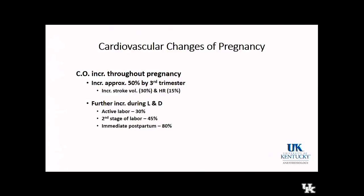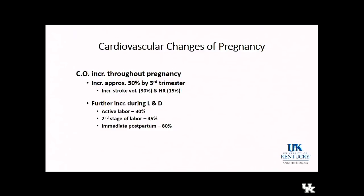Cardiac output increases throughout pregnancy. By the third trimester, cardiac output has increased about 50% above pre-pregnancy levels, predominantly from an increase in stroke volume, with a small increase in heart rate. During labor and delivery, you see further increases. During the active phase of labor, around five or six centimeters dilated, there's another 30% increase. In the second stage of labor when they're pushing, it's about a 45% increase. In the immediate postpartum period, autotransfusion as the uterus involutes produces as much as an 80% further rise in cardiac output above the 50% baseline pregnancy increase.